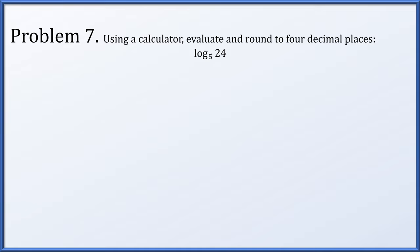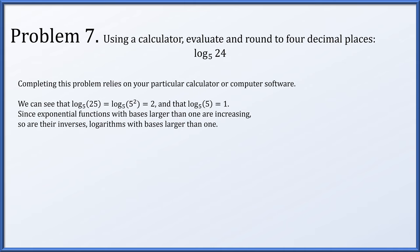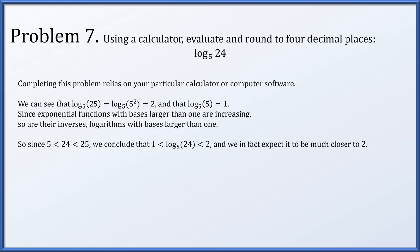Problem 7: using a calculator, calculate and round to four decimal places the logarithm base 5 of 24. Before plugging in, note that the log base 5 of 25 is 2 and the log base 5 of 5 is 1. Since exponential functions with bases larger than 1 are increasing, so are logarithms with bases larger than 1. Since 24 lies between 5 and 25, the log base 5 of 24 lies between 1 and 2. Because 24 is significantly closer to 25, we expect a result close to but just below 2. Plugging into a computer gives 1.9746.